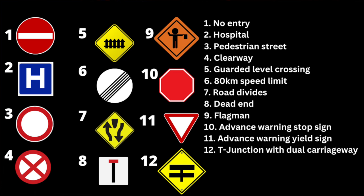Sign number one is no entry — no entry to vehicles. Sign number two is hospital — hospital ahead. Number three is a pedestrianised street or pedestrianised zone. Number four is a clearway. Number five is a level crossing guarded by gates or barriers. Number six is the rural speed limit sign stating that the maximum speed limit is 80 kilometres.